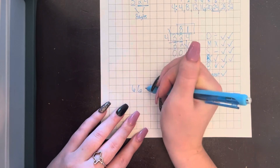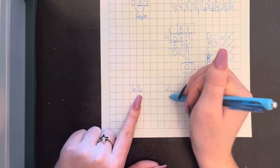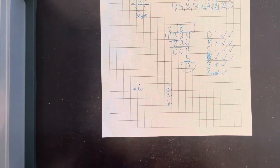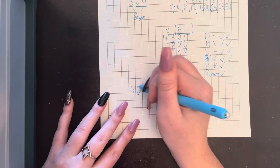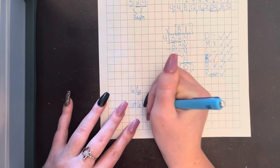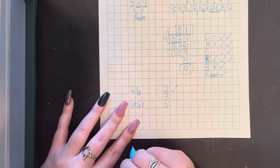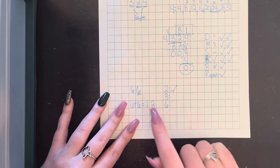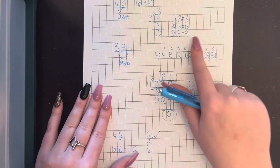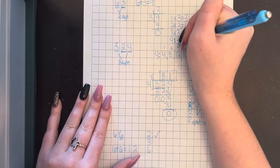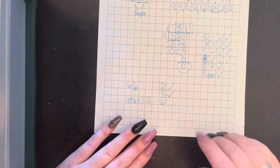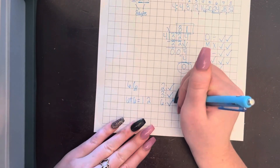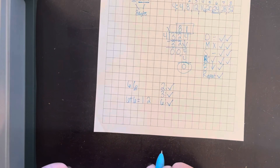Let's use 66. We're looking at the rules for 2, 3, and 6. Is the number even? Yes, 66 ends in 6, so it is divisible by 2. Now, is the sum of the digits divisible by 3? Six plus six equals 12. Looking at our multiples of three: 3, 6, 9, 12 — yes, 4 times 3 equals 12, so it is divisible by 3. Since we checked off both 2 and 3, it's automatically divisible by 6. We know 6 times 11 equals 66.